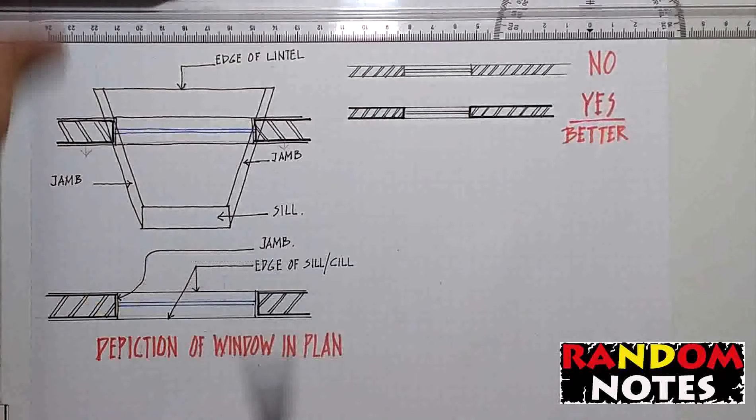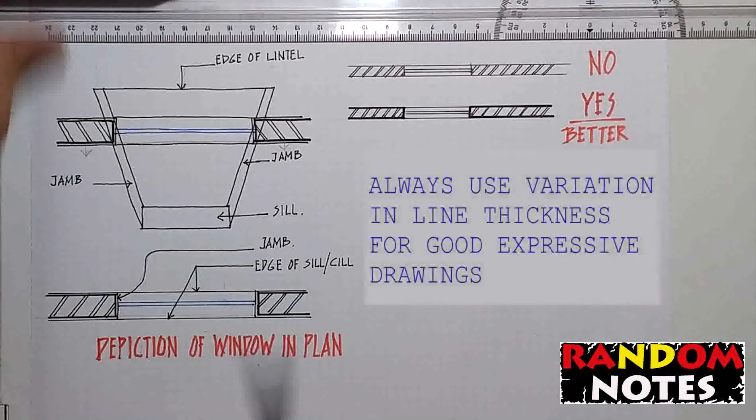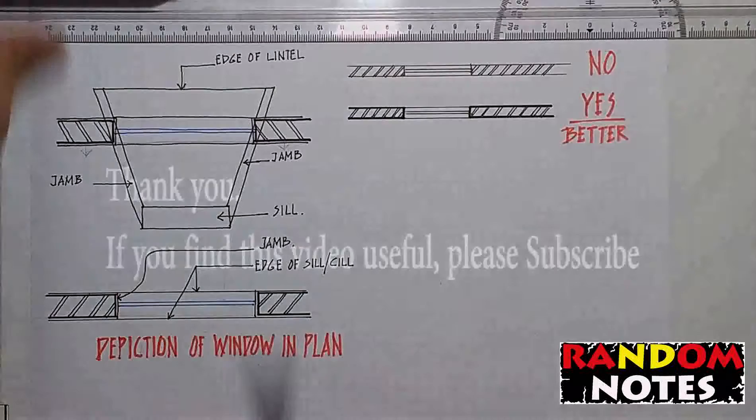In any architectural drawing, variation of line thickness creates a better drawing and also helps in better understanding of the idea, detail or design. Make sure whenever possible use variation in line thickness to make good expressive drawings. Hope this video was useful. Thanks for watching.